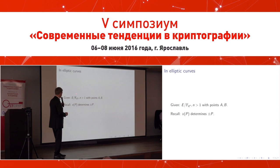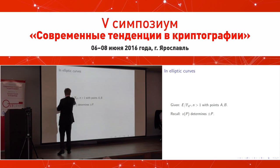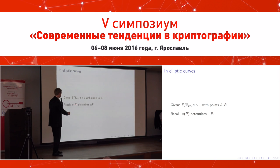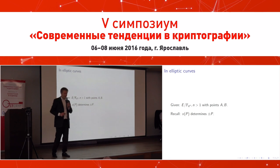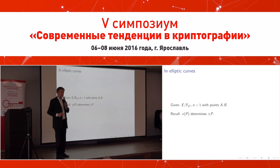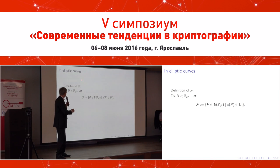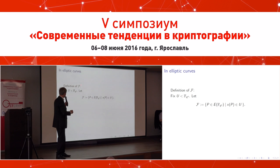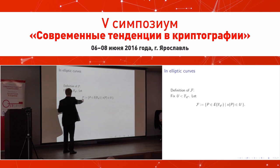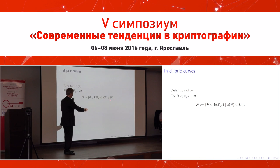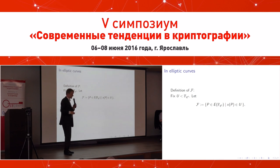We have an elliptic curve over an extension field. Every point has an X coordinate, and the X coordinate determines the point up to sign. The definition of the factor base in this situation is given by a sub-vector space with a restriction on the X coordinates.